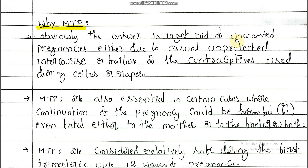Those people who don't want children and are not using any type of contraceptive method — casual unprotected intercourse — undergo MTPs. Also, in cases of failure of contraceptives used during coitus, those people undergo MTP. In rape cases also, under emergency conditions, people undergo MTPs. Earlier we discussed emergency pills as one method, and MTP is also one such method.